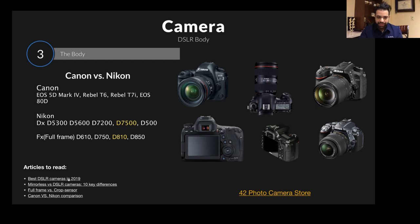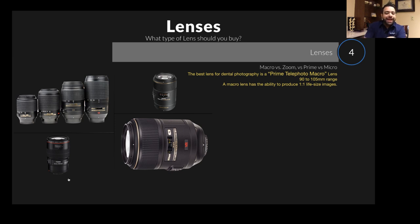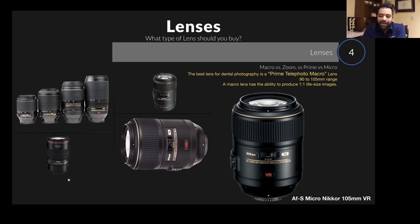You can go through Nikon versus Canon comparison lists, but if you have your camera already, keep it with you during this presentation because I'll mention things you'll want to check on your camera. For the lens, a macro lens is what I prefer for dental photography — specifically a 1:1 life-size prime telephoto macro lens, which is what I have in Nikkor micro. That's the best lens I've found, giving very crisp, detailed images.